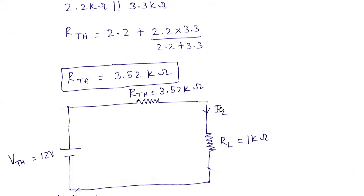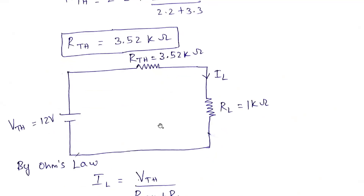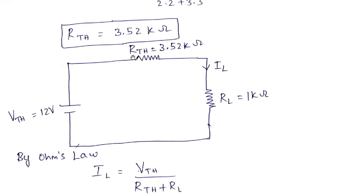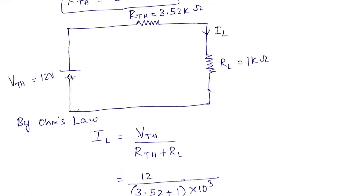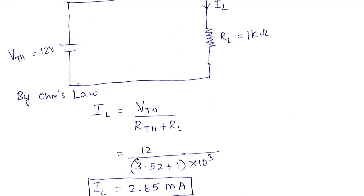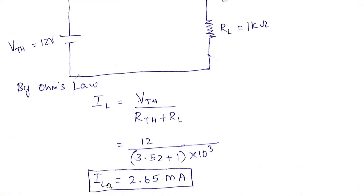Now RTH and VTH are in series, and the load resistance is also in series with them. We need to find load current IL using Ohm's law: IL = VTH / (RTH + RL). Substituting 12V for VTH, 3.52 kΩ for RTH, and 1 kΩ for RL — that is (3.52 + 1) × 10³ total — simplifying gives IL = 2.6 milliamperes.